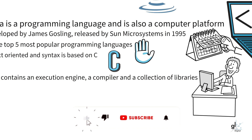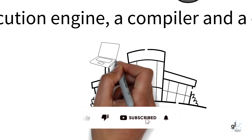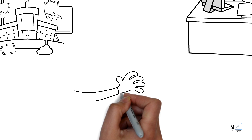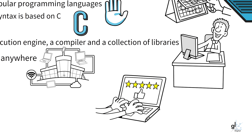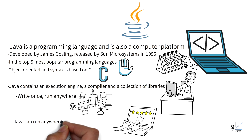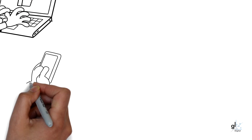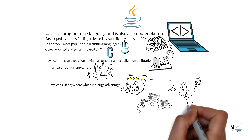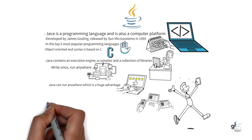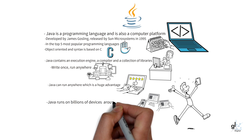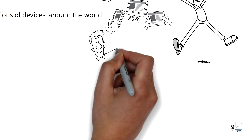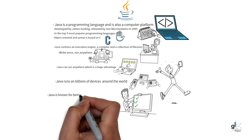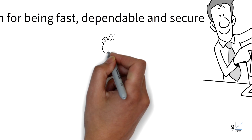A key feature of Java is based on the write-once-run-anywhere philosophy. A single code base written in Java can be used to run on a multitude of different types of devices, which is a huge competitive advantage over other programming languages. The Java platform runs on billions of devices worldwide including mobile devices, desktop computers, laptop computers, the internet, game consoles, medical devices, scientific supercomputers, data centers, and many others.